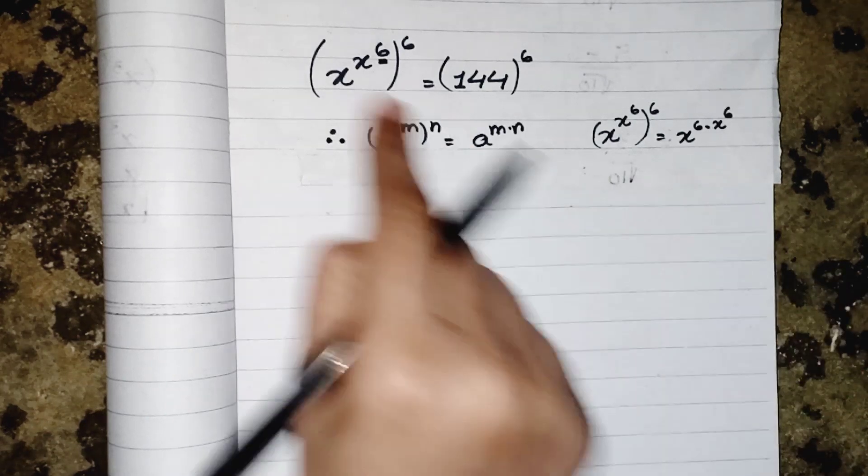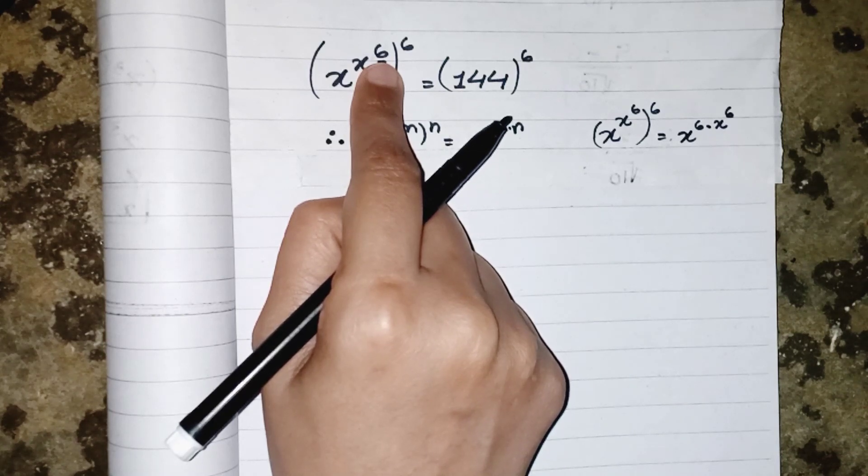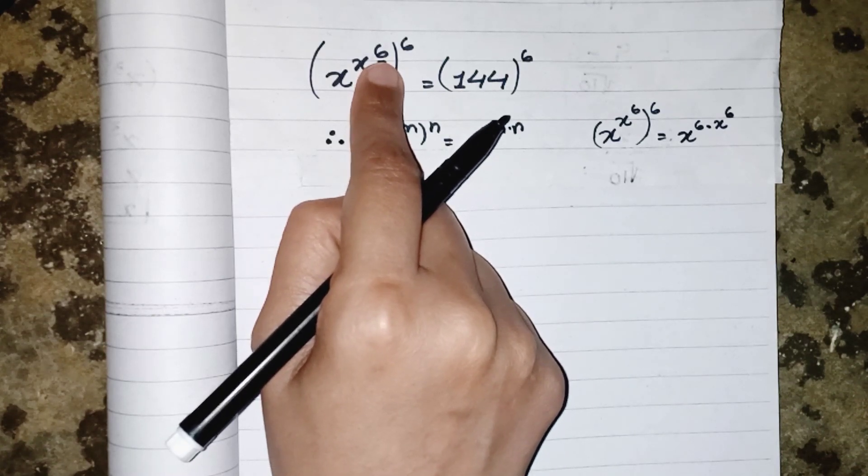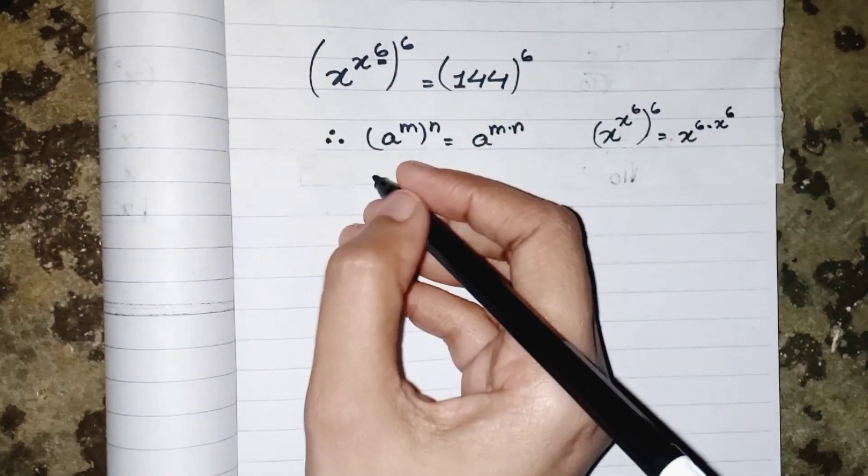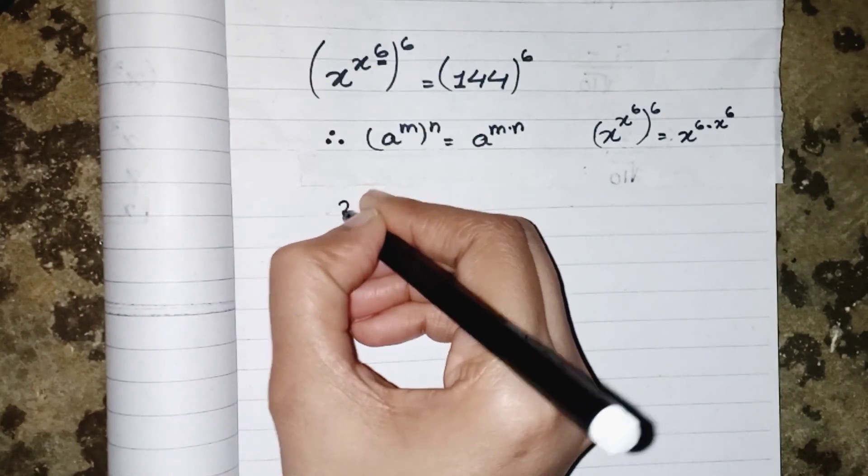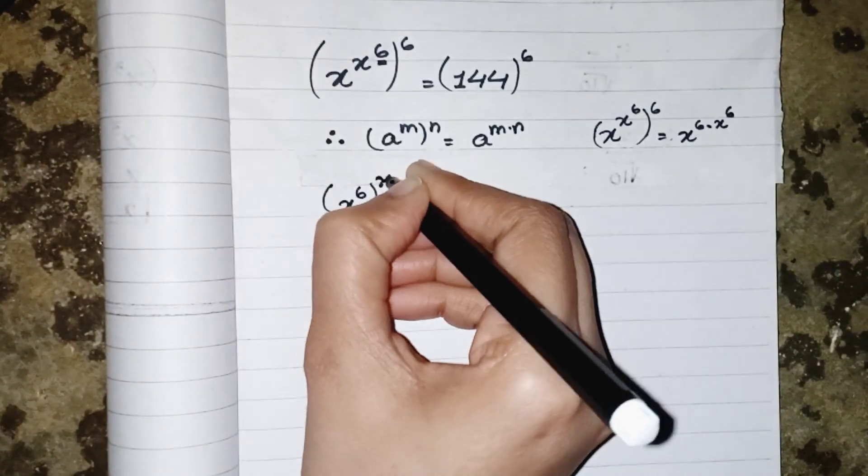So we can write it like (x^6)^(x^6) where we know that 144 is a perfect square of 12, so we can write 12^2 over power 6. Both powers will be multiplied and gives us 12^12 = (x^6)^(x^6).